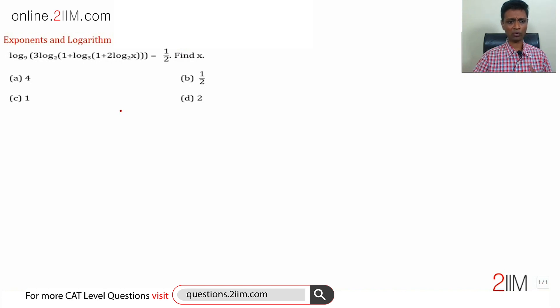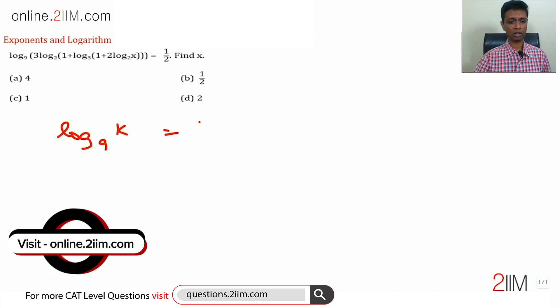It's actually a very simple question. Think about it: log of some number to the base 9 is 1 by 2. What should this be? Log of what to the base 9 is 1 by 2?